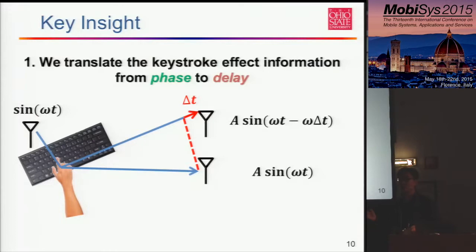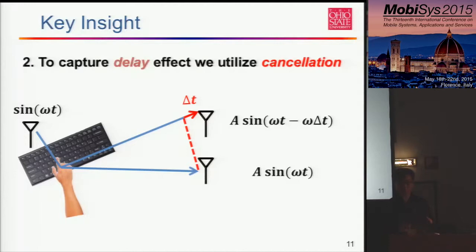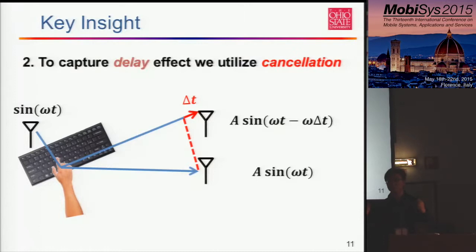We are still far from detection with just these two terms. Another very important insight of our technique is that we introduce a cancellation to capture the delay effect. Why do we need cancellation? Cancellation means we subtract the signals, so we don't care what signal is actually transmitted — the receiver does not need to know what was transmitted. From the shape of the spectrum and its relationship to the cancellation, we can capture the effect of the channel and the delays just by looking at the spectra.